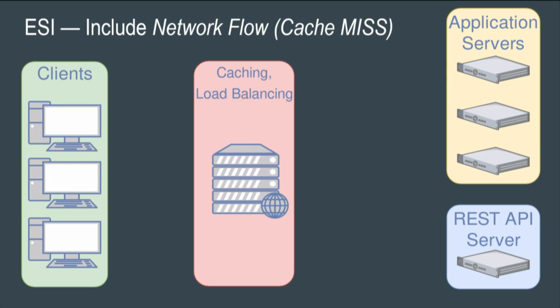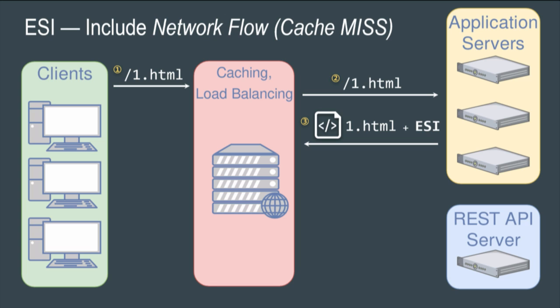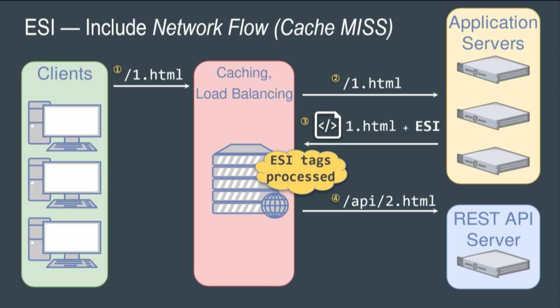To illustrate a cache miss: your client requests one.html, the caching server has a cache miss and must fetch it from the upstream application server. The response comes back with an ESI tag saying please fill in the blanks with two.html. That tag is parsed on the caching server, a side request is sent to the API server, and the ESI engine fills in the blanks.